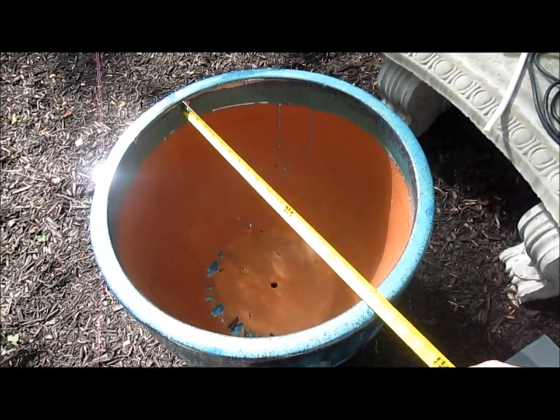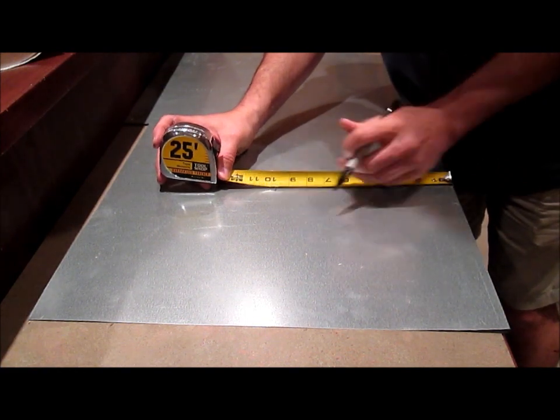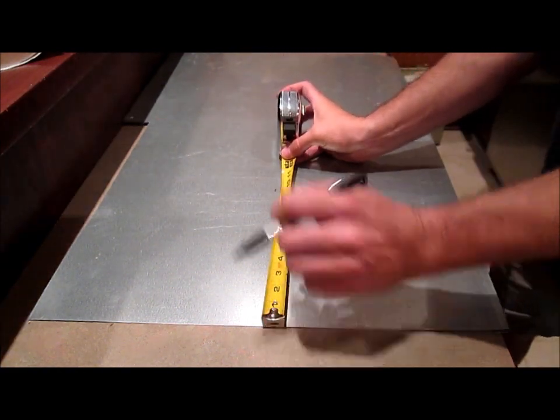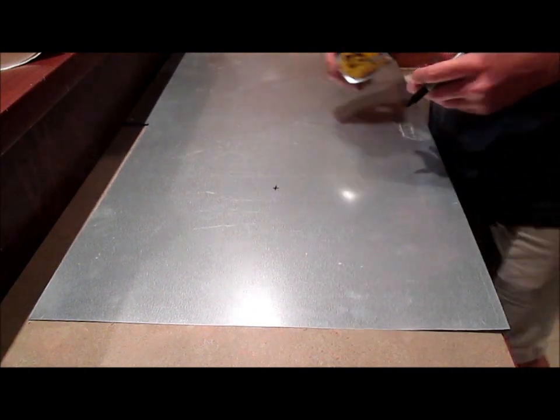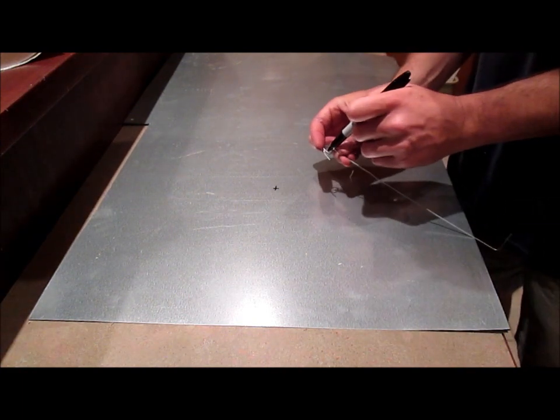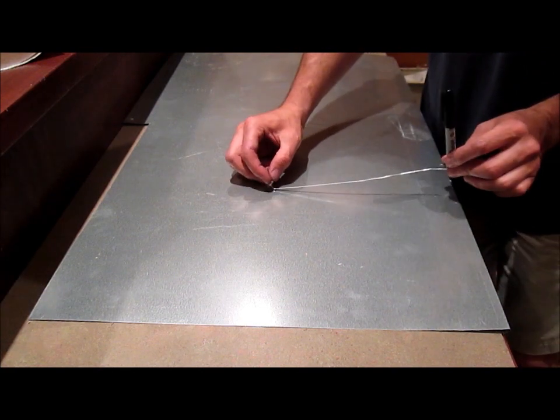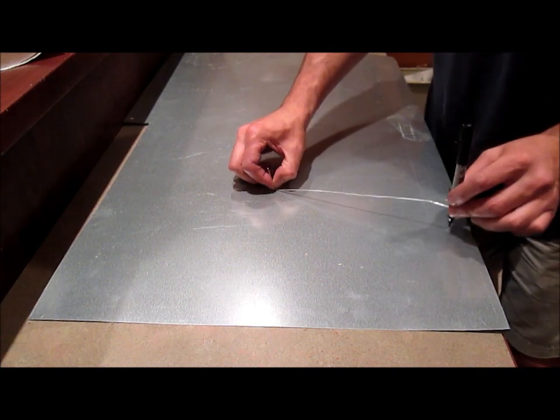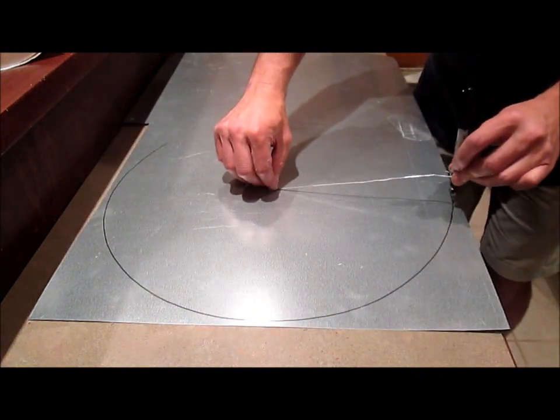Start by measuring the diameter of your pot. Now measure out half the diameter of your pot in this direction. And half the diameter of your pot in this direction. And that will be the center of a circle. Take a piece of rope or wire that's half the diameter of your pot again. And put it right in that center. And draw a circle all the way around your sheet metal.